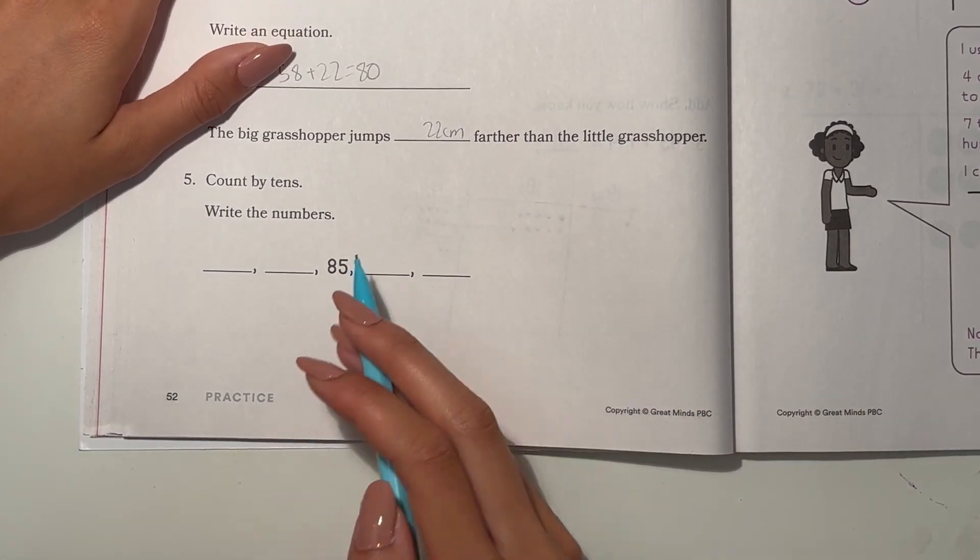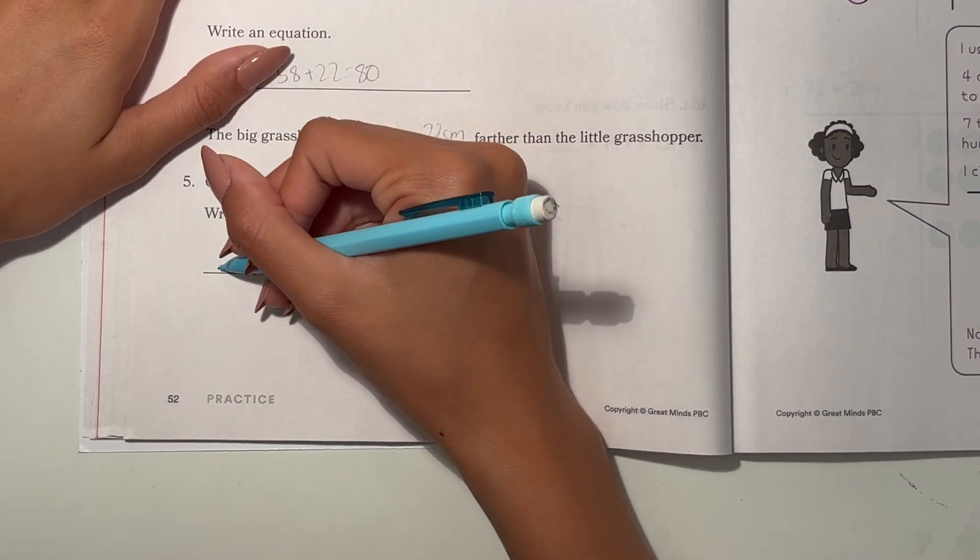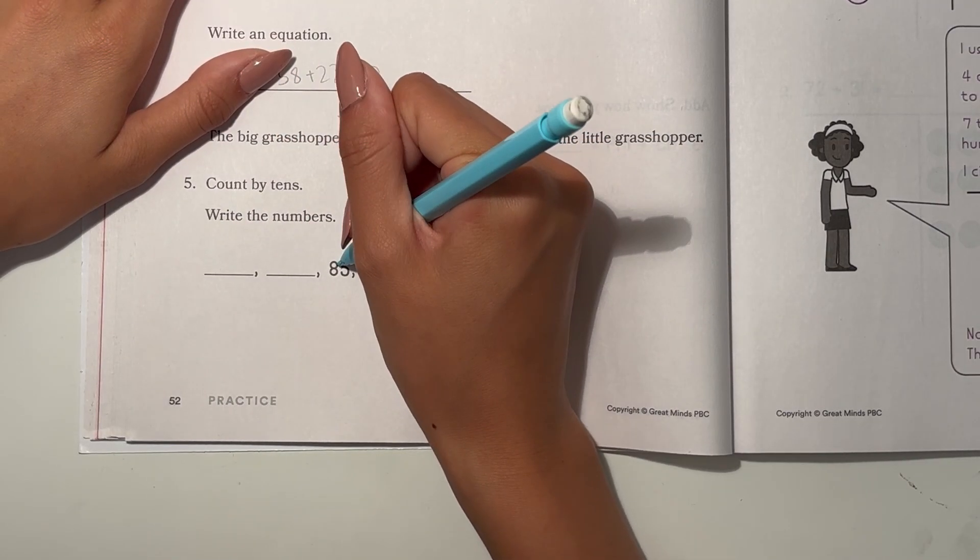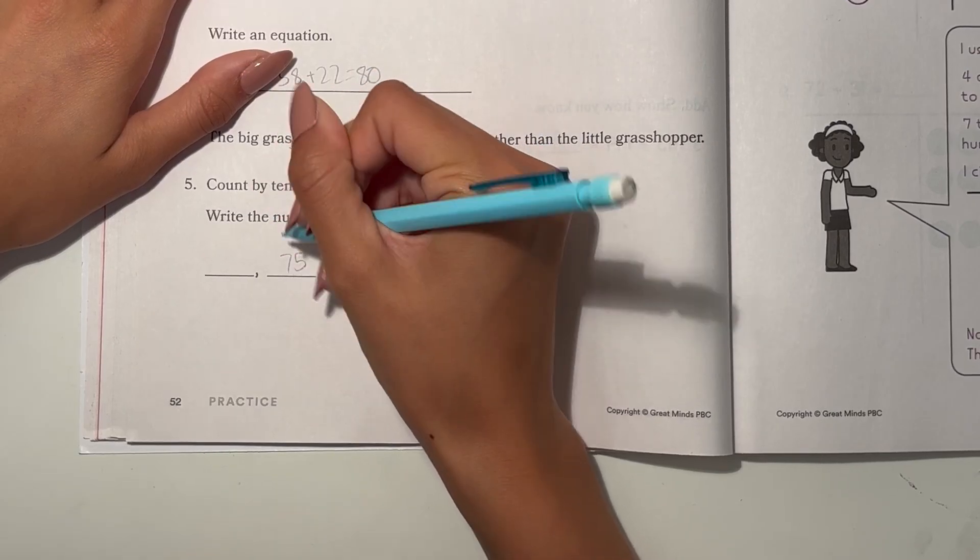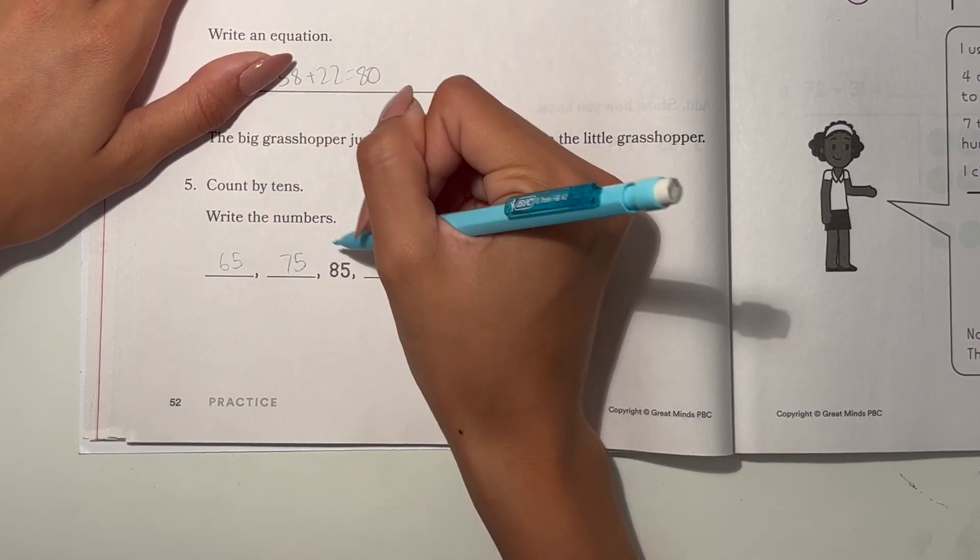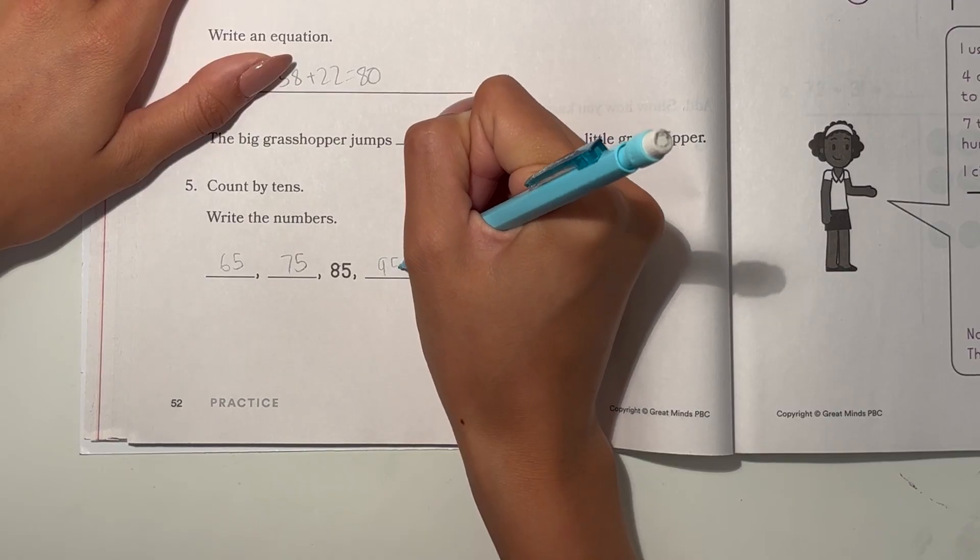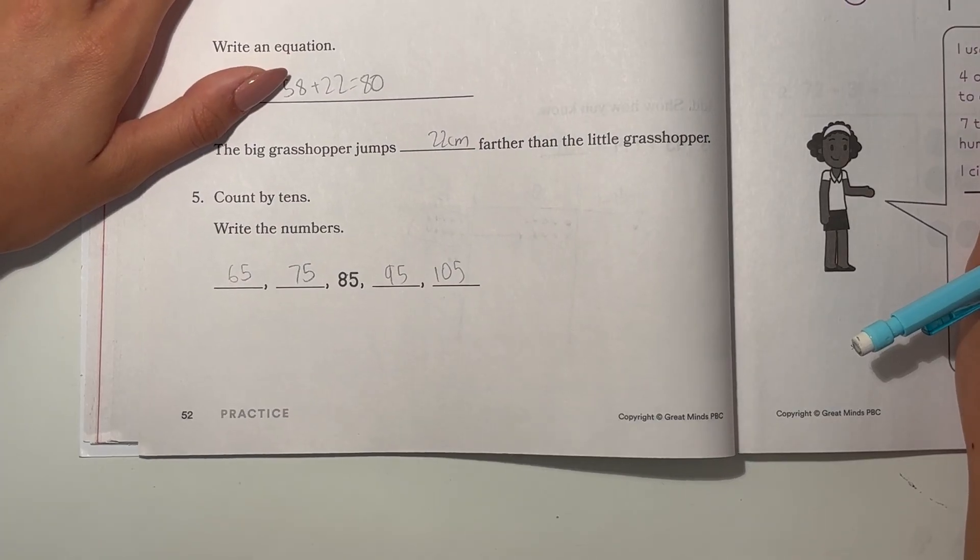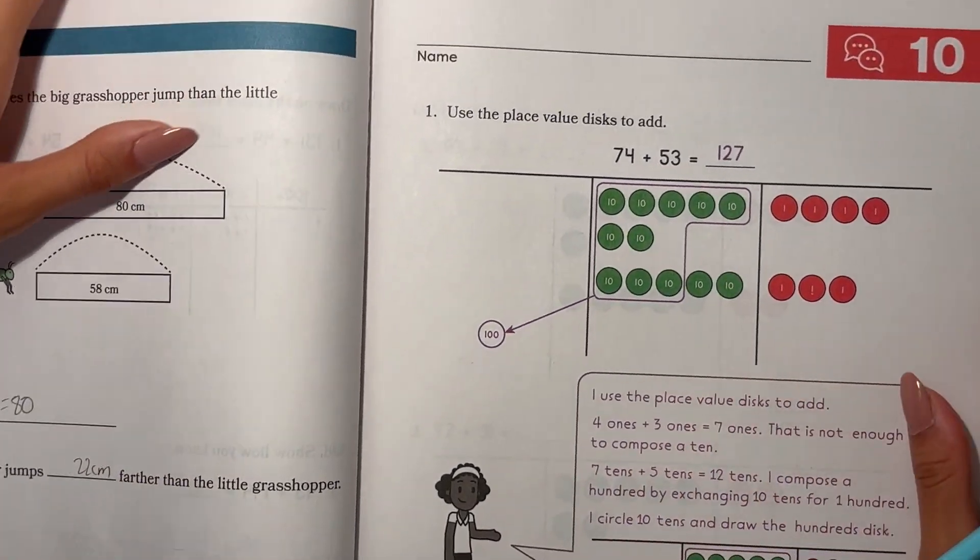Now count by 10s. So let's start from the first one. To get to that, we count backwards. So this is 85 and this is 75 and this would be 65. So 85 and this is 95 and then 105.